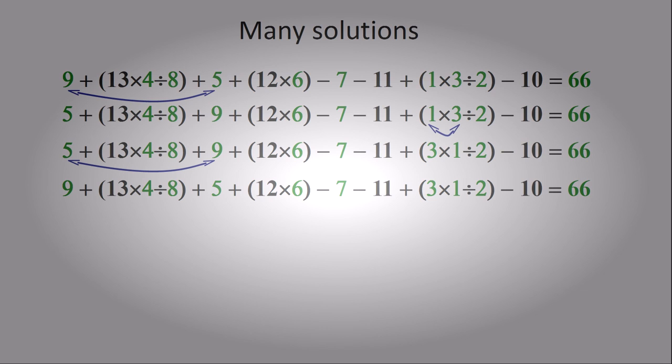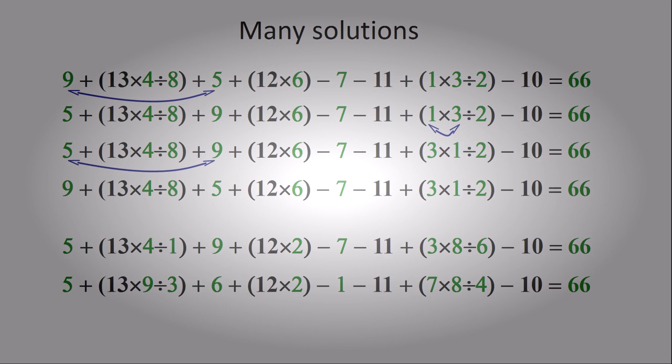But these aren't the only answers. I looked online and some people had posted other ways that you could get to 66. And these are completely different arrangements of numbers. And each time you have these, remember, you can generate other solutions by swapping the two numbers which are being added or swapping the two numbers which are being multiplied.